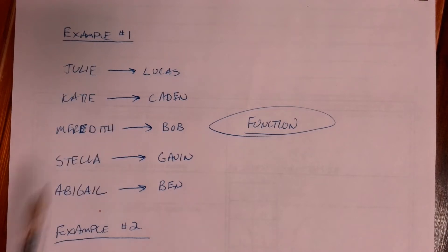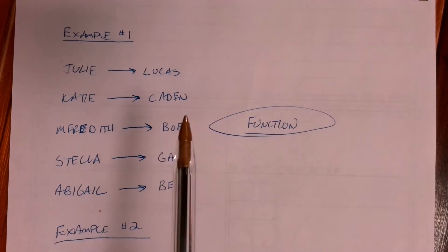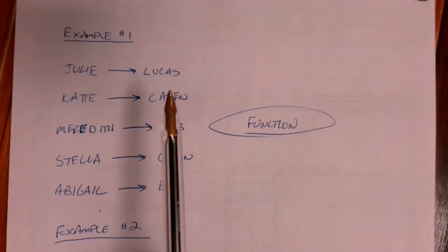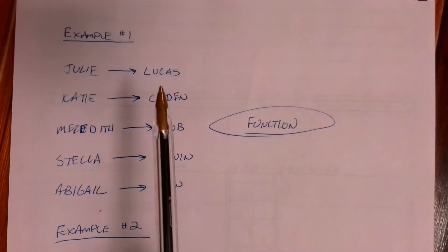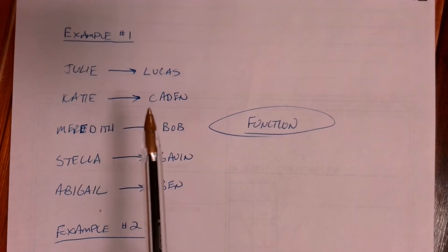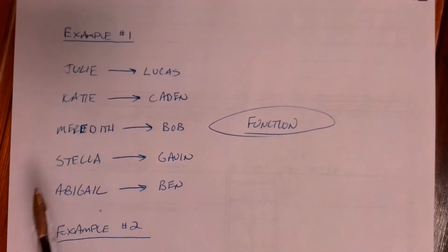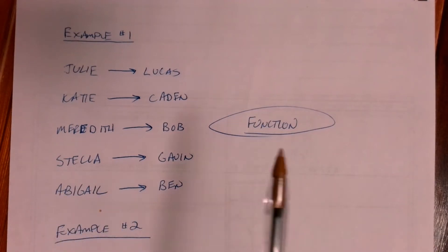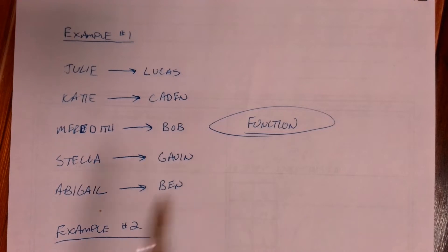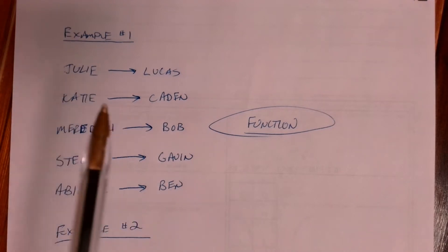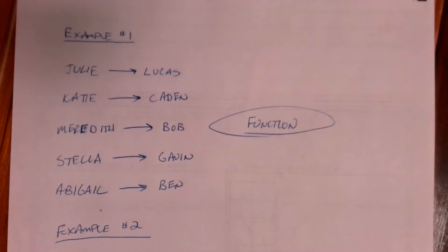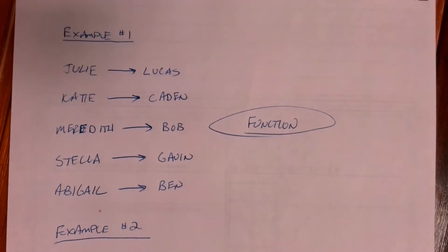Here's an example. You have five girls, and each girl likes exactly one boy. Julie likes Lucas, Katie likes Caden, Meredith likes Bob, Stella likes Gavin, and Abigail likes Ben. This is considered a function because each girl likes exactly one boy.